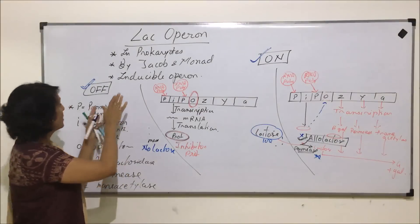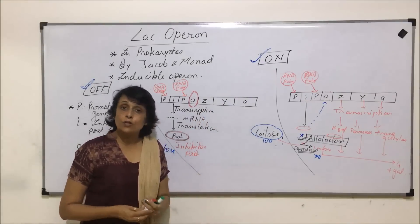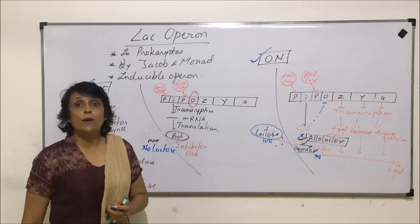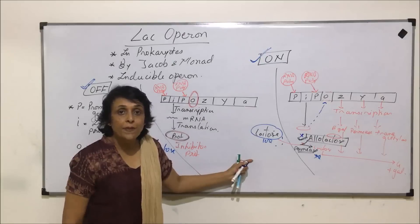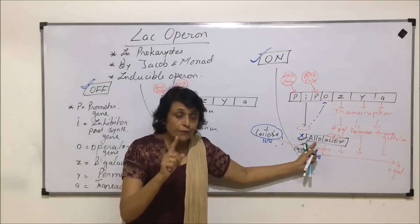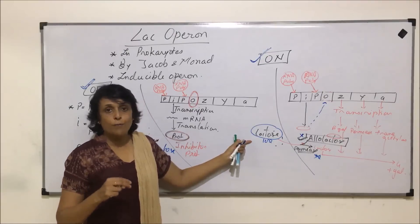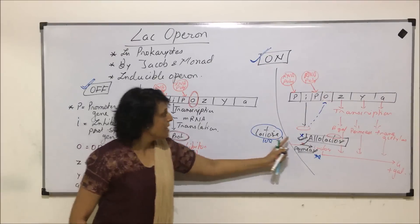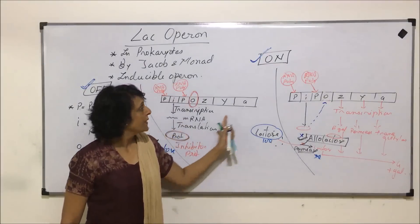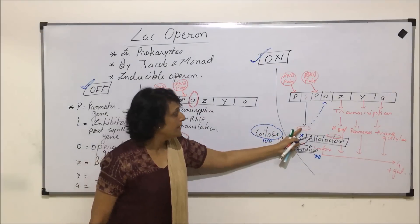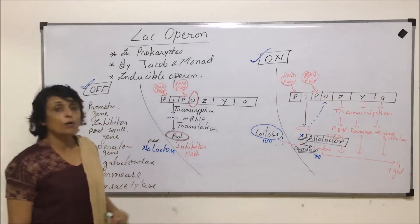So this is the inducible operon — normally it remains off. It can be induced by lactose. If a question asks which substance induces the lac operon, our answer should be allolactose if that is in the options. If the options only give lactose, maltose, sucrose and others, we will pick lactose. But if the option says lactose, allolactose and something else, we will take allolactose — because it is the form of lactose responsible for turning the operon on. The reason is that the inhibitor protein has a very high affinity towards allolactose. So this is about lac operon.